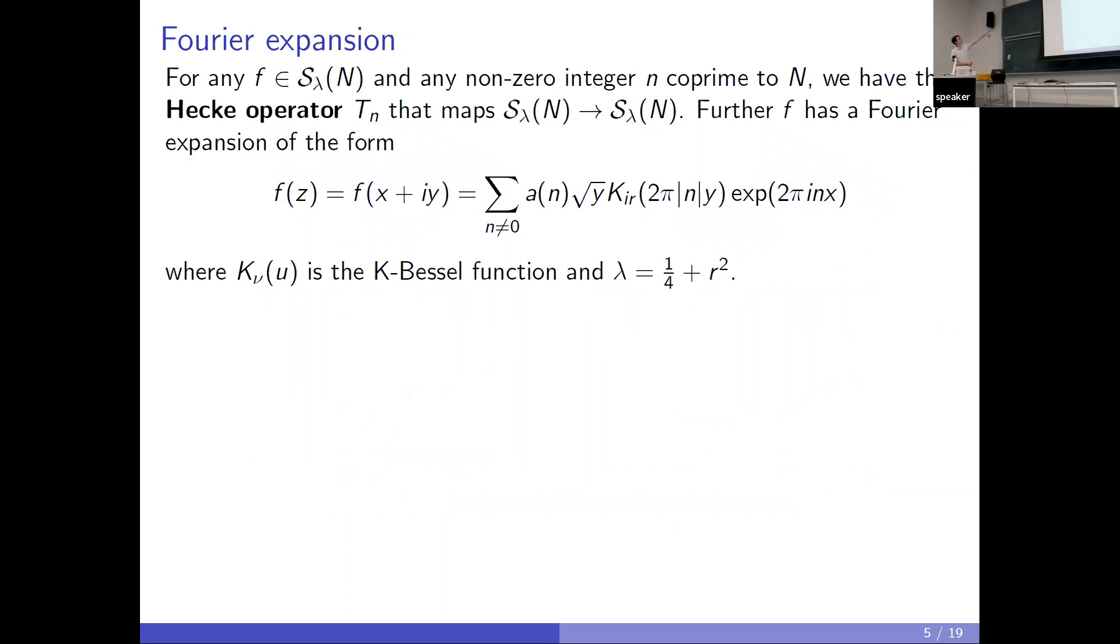Let's say we have some Maass form with Laplacian eigenvalue lambda. We also have these Hecke operators which map the space of Maass forms to more Maass forms. Maass forms also have a Fourier expansion with these a_n Fourier coefficients, times the K-Bessel function, times an exponential function. We also write r which is related to the Laplacian eigenvalue as lambda equals a quarter plus r squared.